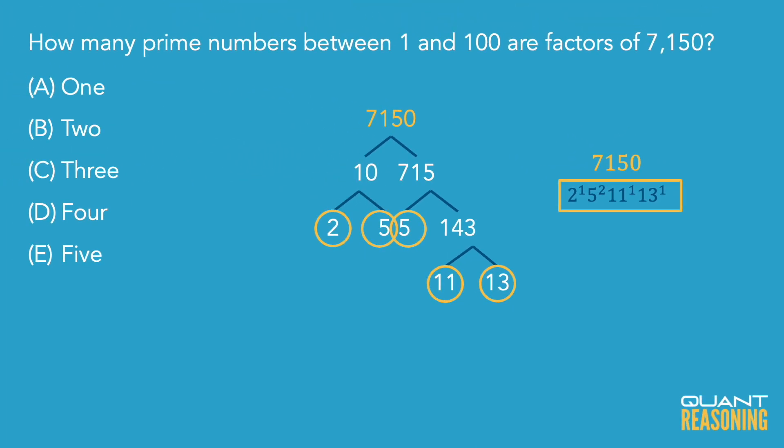How many of the numbers between 1 and 100 are prime factors of 7,150? Well, I'm seeing 4 of them. So I'm going to go ahead and pick 4 and move on to the next question.